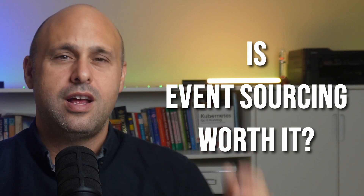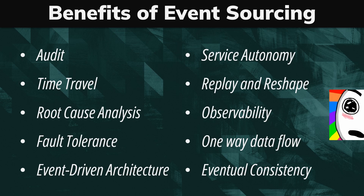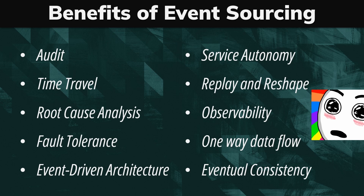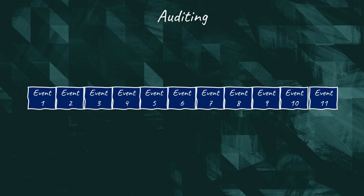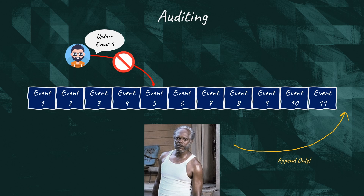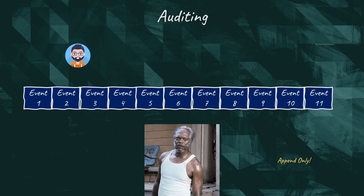Now it's time to answer the question: is event sourcing as good as it looks? Let's focus only on the most important benefits. Auditing is number one. Event sourcing preserves the entire history of our data and protects it from tampering. Events are immutable — we can append events to the log, but never modify them. If for any reason we want to revert the change caused by an event, we need to perform a compensating action, which results in an additional event in the log.